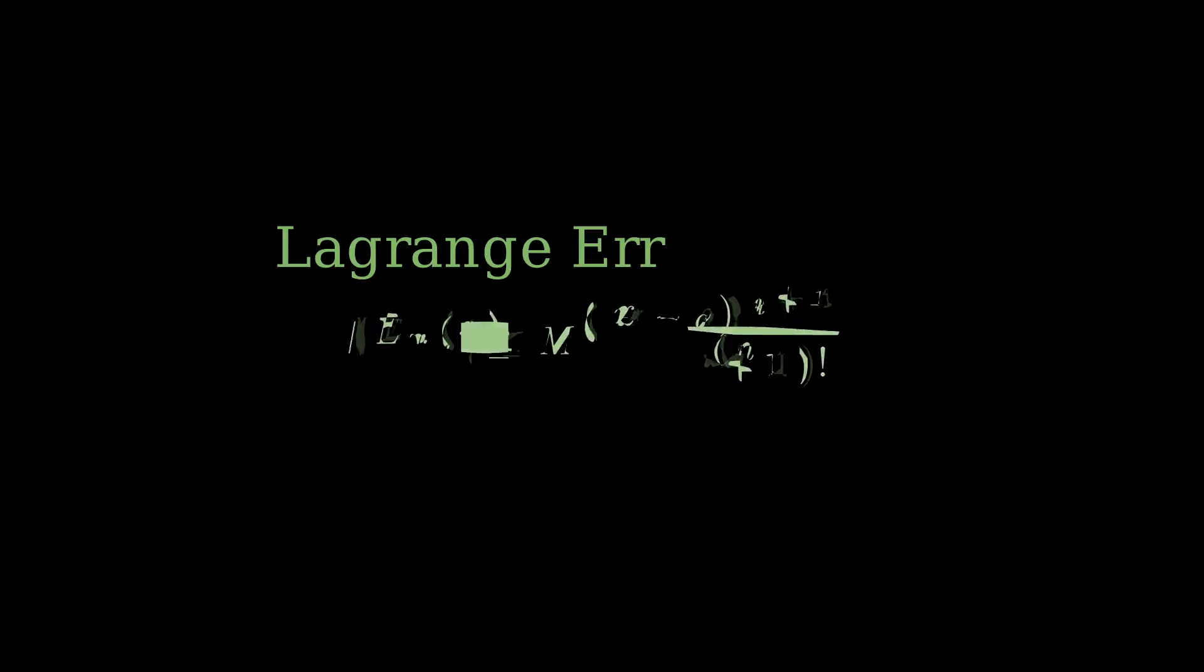To find an explicit expression for the error function, we integrate n+1 times with respect to x. Remember that at x equals a, where our Taylor series is centered, the error function, as well as all its subsequent derivatives, are equal to zero. After integrating, we arrive at the Lagrange error bound for a truncated Taylor polynomial.